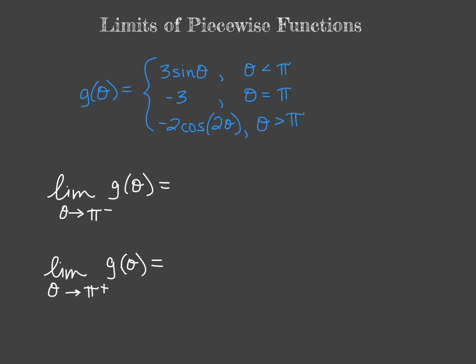g of theta is a piecewise function that is not graphed for us. It is instead just written out, so we'll take a look at this in a more algebraic way.